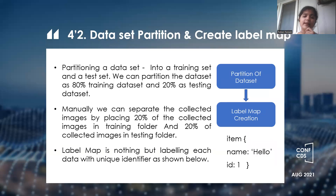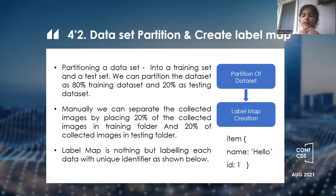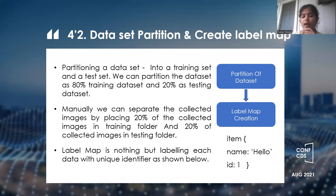After that, dataset partitioning and creation of the label map takes place. Partitioning of data is a very crucial step in order to gain better results. We have taken the 80/20 rule, which means 80% of the data is used for training and 20% is used for testing. Label map creation is important so the system can easily identify each sign.